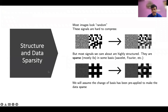So let's look at an example. It turns out that although most images look random and are hard to compress, most signals that we care about, such as these images below, are highly structured. They are sparse after using a basis transform such as the wavelet transform or the Fourier transform. Henceforth we will assume that this change of basis has been pre-applied to make the data sparse.